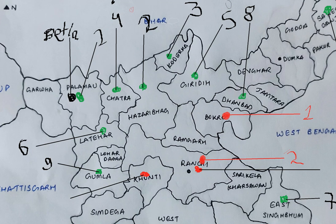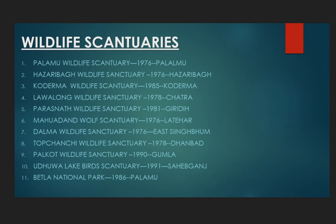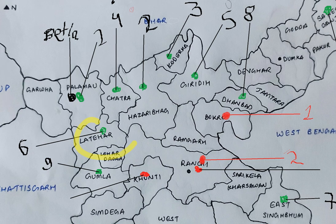Next is Mahuadanr Wolf Sanctuary in Latihar, which was also established in 1976. It has an area of 63.25 square kilometers.